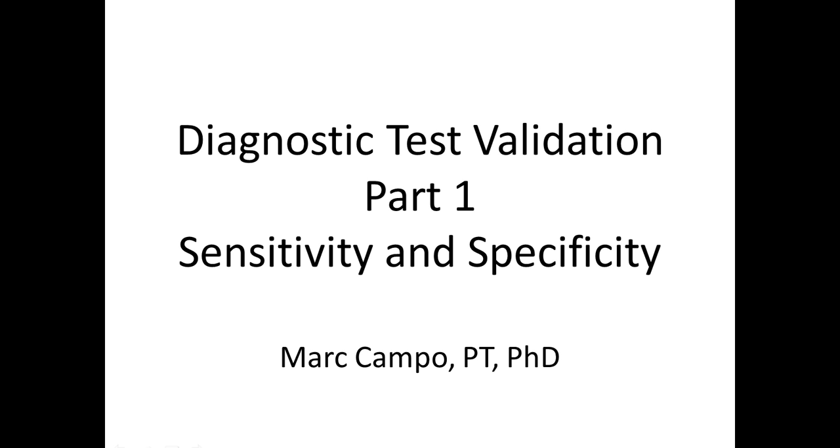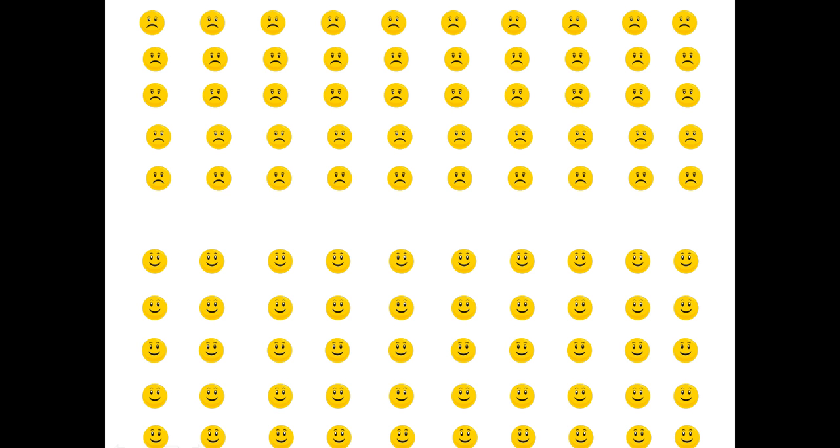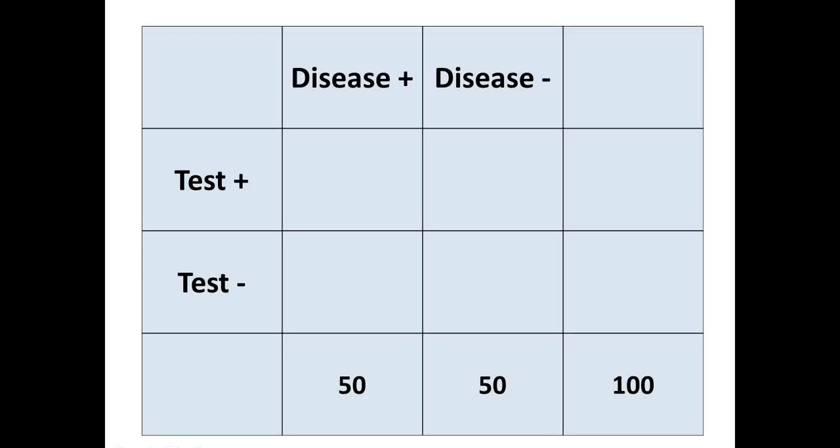So let's say we've developed a new diagnostic test and we want to validate this test. What we could do is assemble a validation sample — in this case, let's say we have 100 people, 50 on top have a disease and 50 on the bottom do not. We could set up a 2x2 table, putting the tests into the rows and disease status in the columns, but you could do it any way you like.